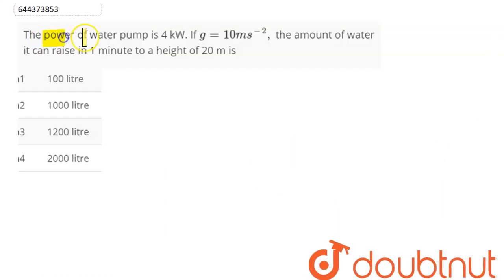Question is: power of water pump is 4 kilowatt, if g is 10 meter per second square, the amount of water it can raise in 1 minute to a height of 20 meter is.